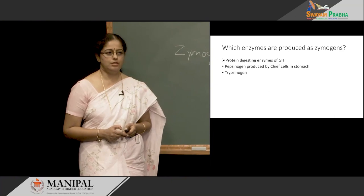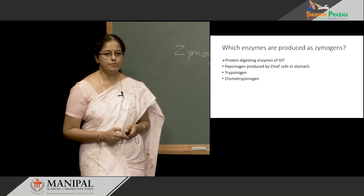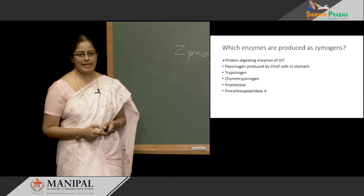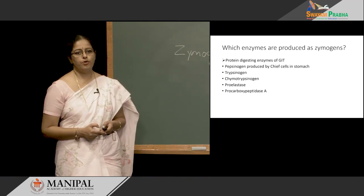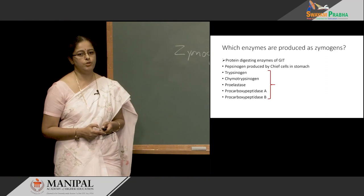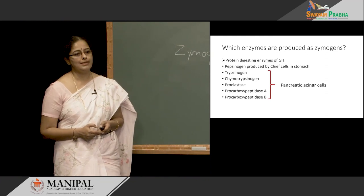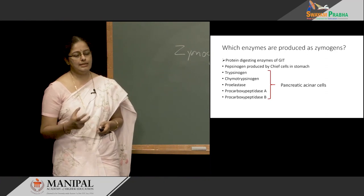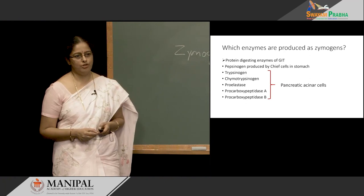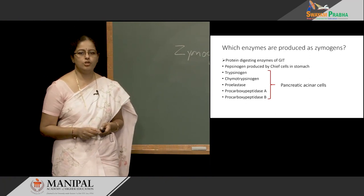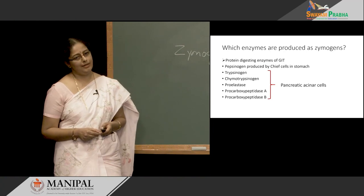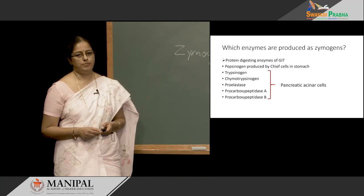We have trypsinogen, chymotrypsinogen, proelastase, procarboxypeptidase A, and procarboxypeptidase B. These are all Zymogens produced in the pancreatic acinar cells. They are synthesized and stored in the pancreas in their Zymogen forms. Once they reach the duodenum in the presence of food, they get activated to their active enzyme form.